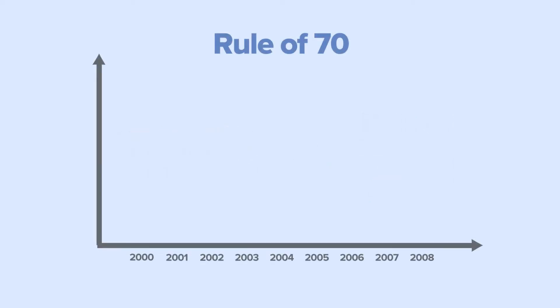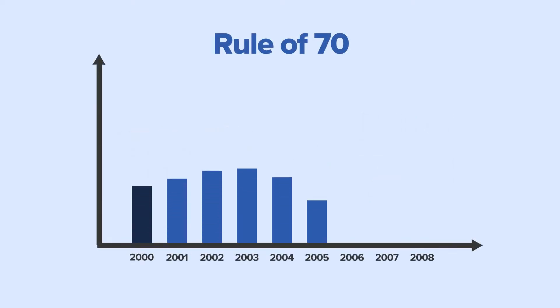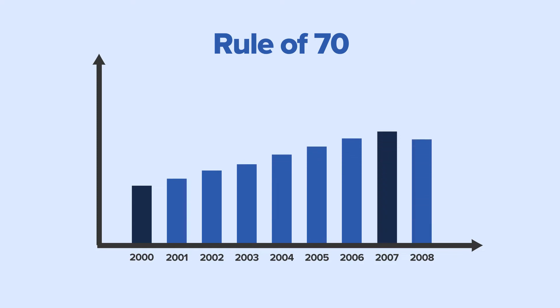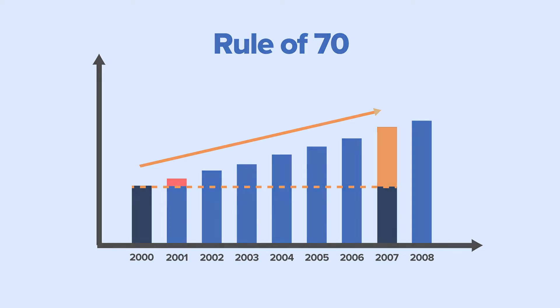The Rule of 70 shows that if something grows by 10%, it will double in size every 7 years. Conversely, if something grows by 7%, it will double every 10 years.